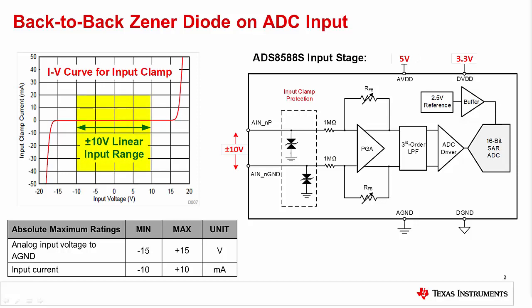You can see from the IV curve on the left that across the plus minus 10 volt linear input range, the clamp is not active in a high-impedance state. In the case of an overstressed signal, the clamp will turn on just above positive 15 volts and just below negative 15 volts. Note that this is a typical curve, and the actual clamp voltage will vary from device to device. Looking at the absolute maximum ratings, the maximum input voltage range is plus minus 15 volts, and the maximum input current range is plus minus 10 milliamps. It is important to note that the internal clamp alone does not limit the input signal to be below the absolute maximum voltage rating. So as a best practice, it is recommended to use an external clamp that limits the signal to less than 15 volts during fault conditions as well.